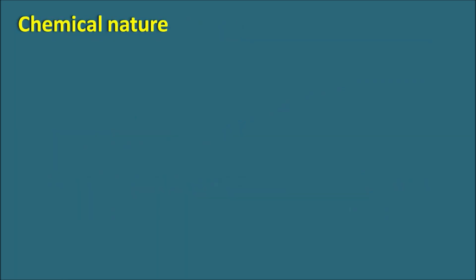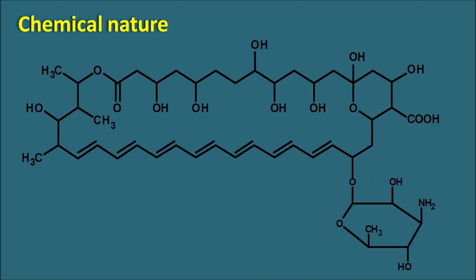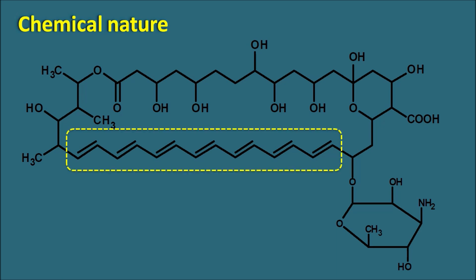What is the chemical nature? This is the structure of Amphotericin B. You can observe it is a large structure with a cyclic structure — that is why it is called macrocyclic. We can also observe the alternative arrangement of double bonds; it has seven conjugated double bonds. So Amphotericin B is a macrocyclic polyene antifungal antibiotic.